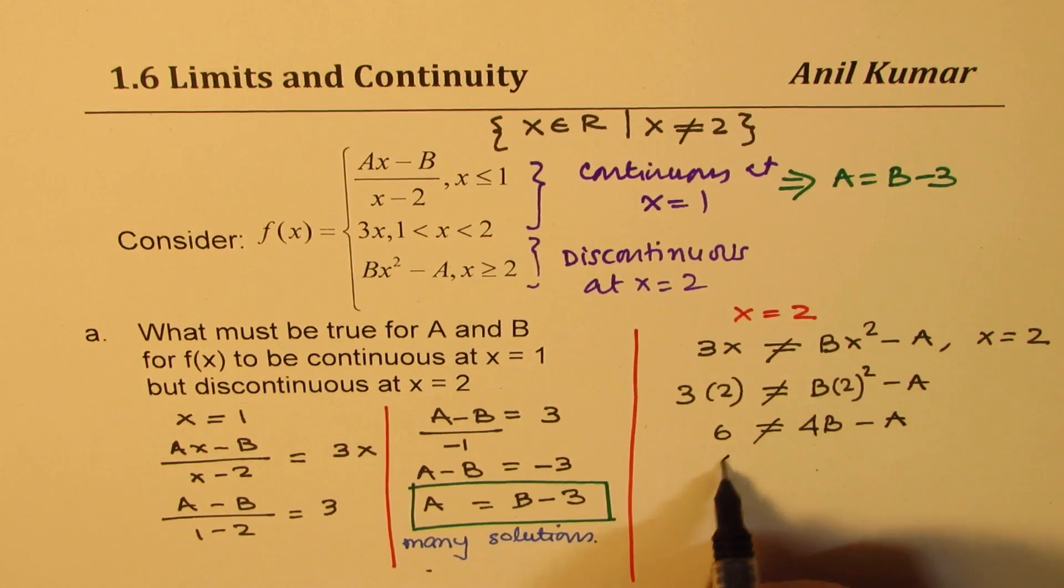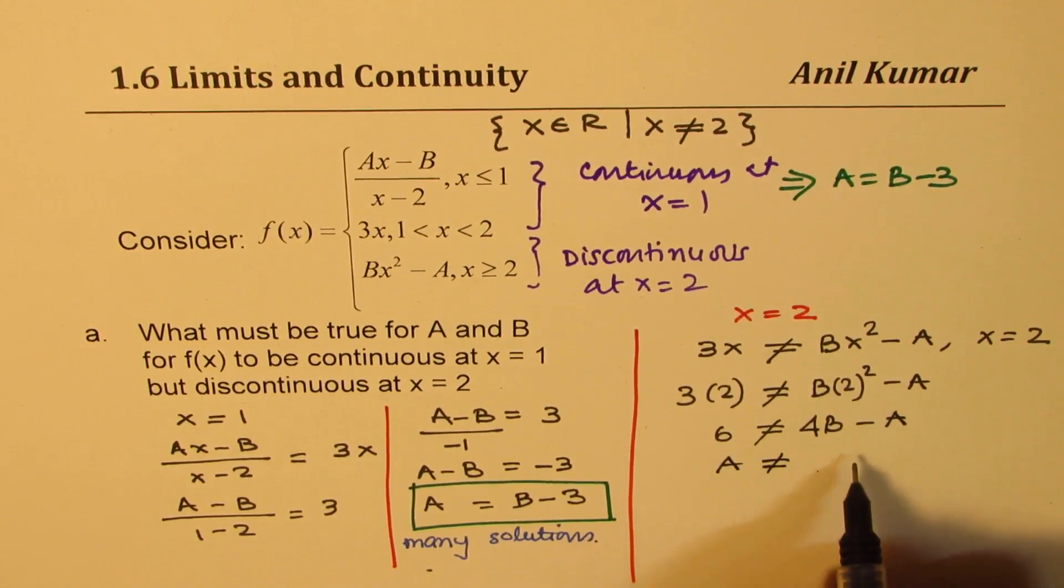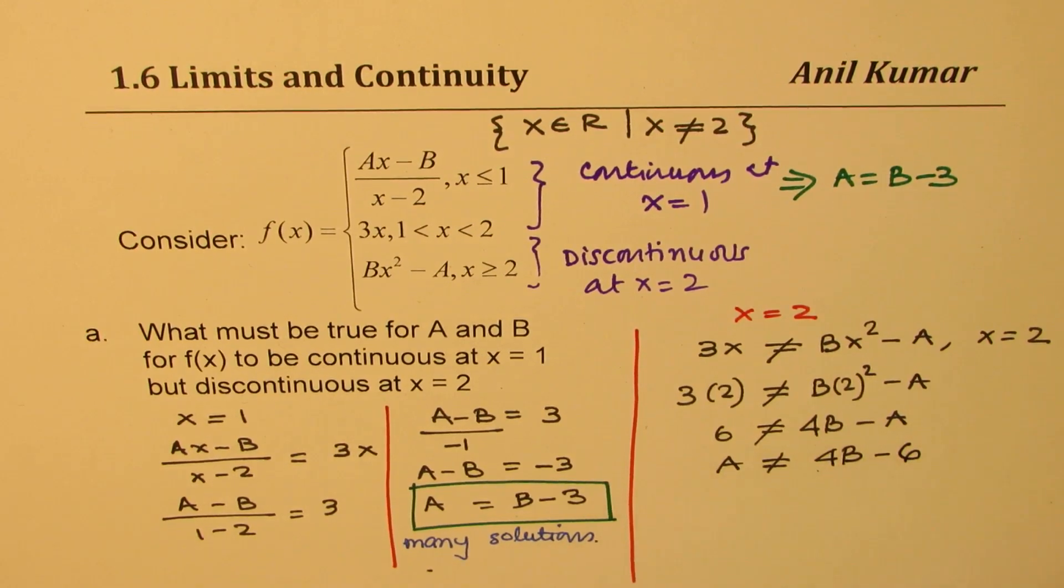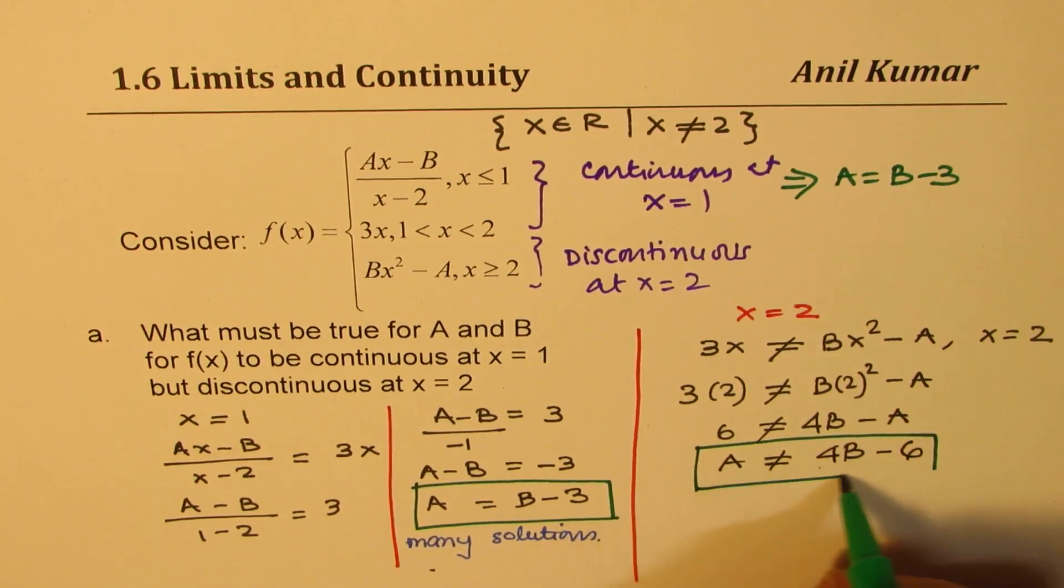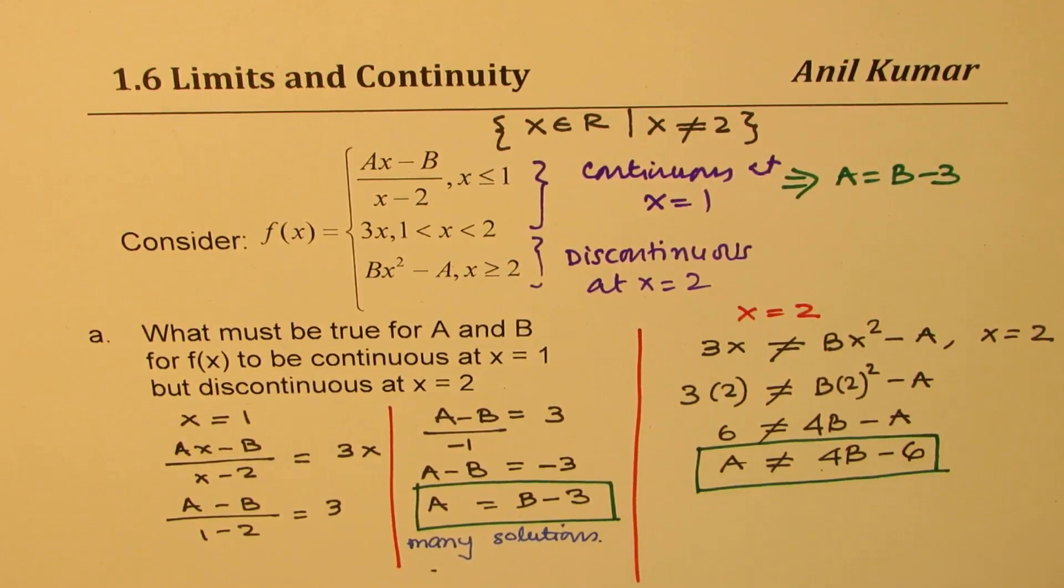So that means that A should not equal 4B minus 6. So this is another condition. That should also be met, right? So 4B minus 6 should not equal A.